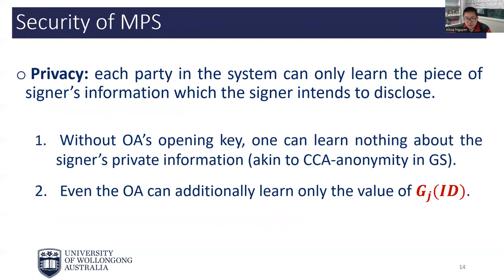Regarding security of MPS, we require two main properties: privacy and unforgeability. Privacy roughly ensures that each party in the system can only learn the piece of the signer's information which the signer intends to disclose. There are two notions of privacy to consider. First, without the opening authority's secret key, it should be infeasible for everyone to learn anything about the signer's private information. Second, even a fully corrupted opening authority cannot learn anything beyond the value GJ of ID. This is a very strong requirement indeed.